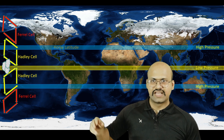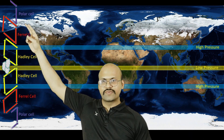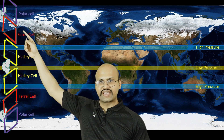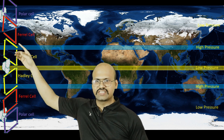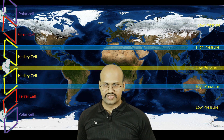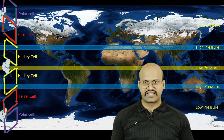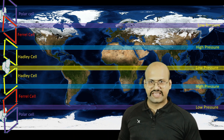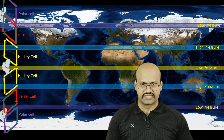Moving further north into the polar regions, at the intersection of the polar cell and Ferrel cell the air again rises up. Therefore we see formation of a lot of clouds over here. Because of the rising air there is a low pressure belt, and again there is a lot of rain and snowfall in these regions.